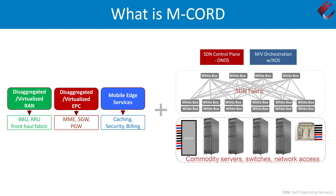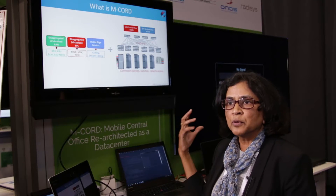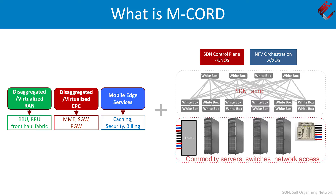For example, you'll see a demo of video content delivery, caching of that, and also our portals to set up services. On the platform itself, all these run on commodity servers and switches, which are controlled by the SDN control plane — that is ONOS — and XOS, which is our orchestration layer.